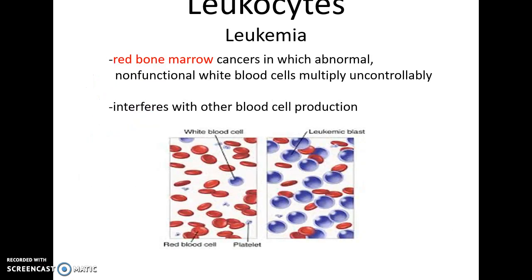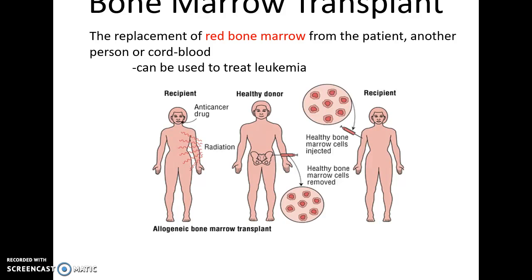Leukemia is the cancer of the red bone marrow, causing it to produce non-functional white blood cells. Not only does this lead to too many non-functioning white blood cells, but it also prevents the production of other blood cells like erythrocytes, causing quite a few problems and eventually leading to death if untreated. One treatment is to destroy the leukemic red bone marrow and replace it with healthy red bone marrow from a donor, allowing the new marrow to produce all the blood cells for the recipient.